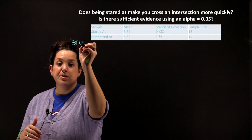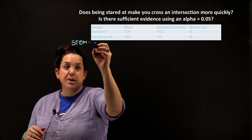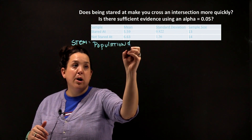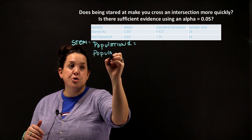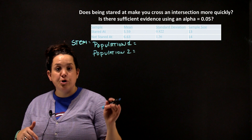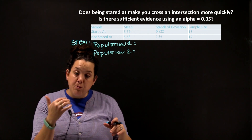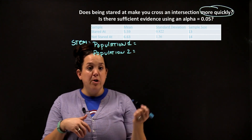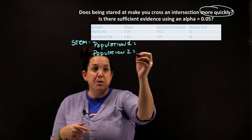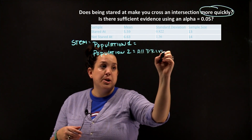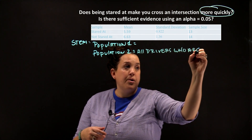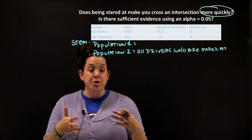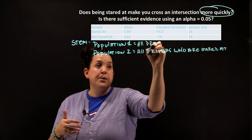Starting with step one, we identify the population — but now we actually have two populations. We have to be considerate of which group we want to show has a larger mean. We want to make the group we're trying to show has a larger mean the first group. Because we want to show that time to cross an intersection is quicker for people who are stared at, their time should be less, so that would be population two: all drivers who are stared at. That means population one is all drivers who are not stared at.